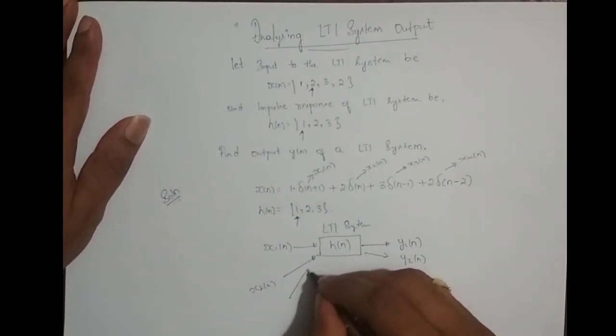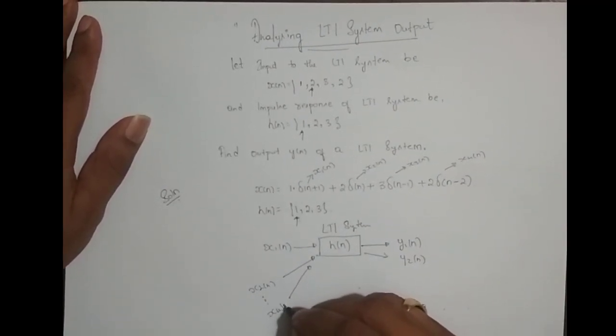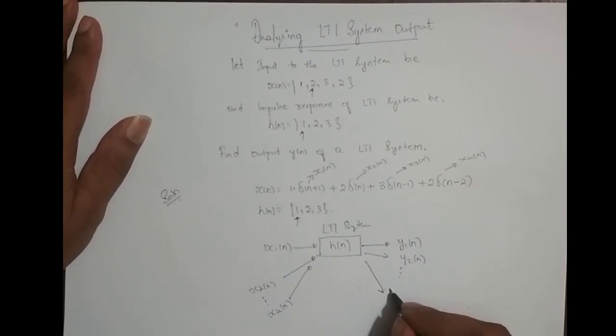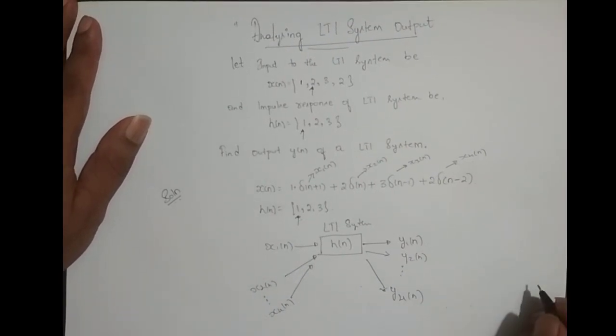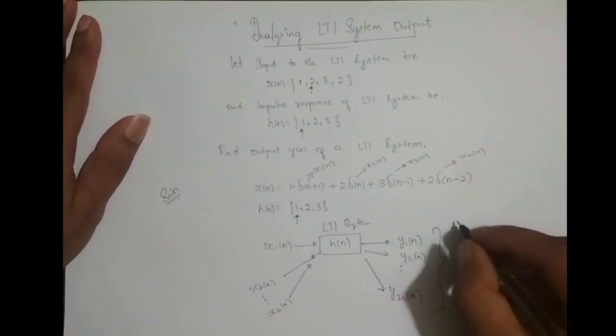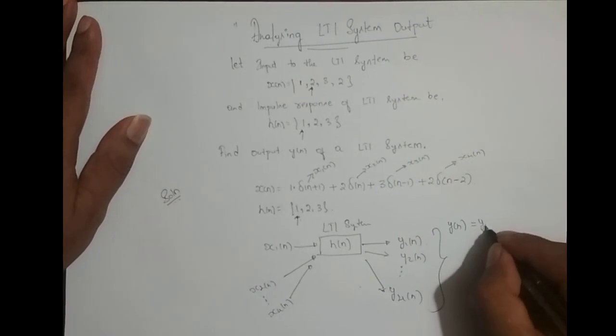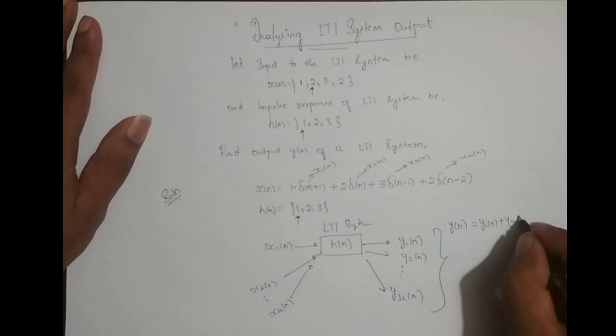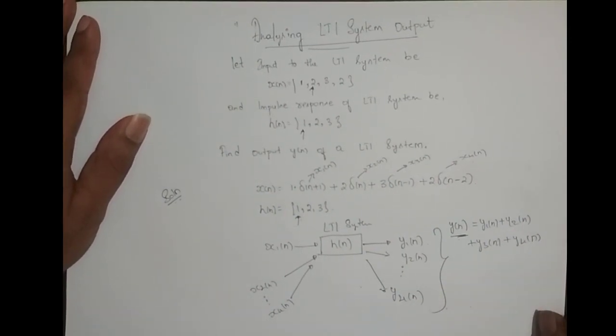And for the same system we feed dot dot dot up to x4(n), and we try to find what is the last output which is y4(n). At the end we add this individual output sequence which is our y(n) which is equal to y1(n) plus y2(n) plus y3(n) plus y4(n). So this y(n) will be our output of an LTI system.